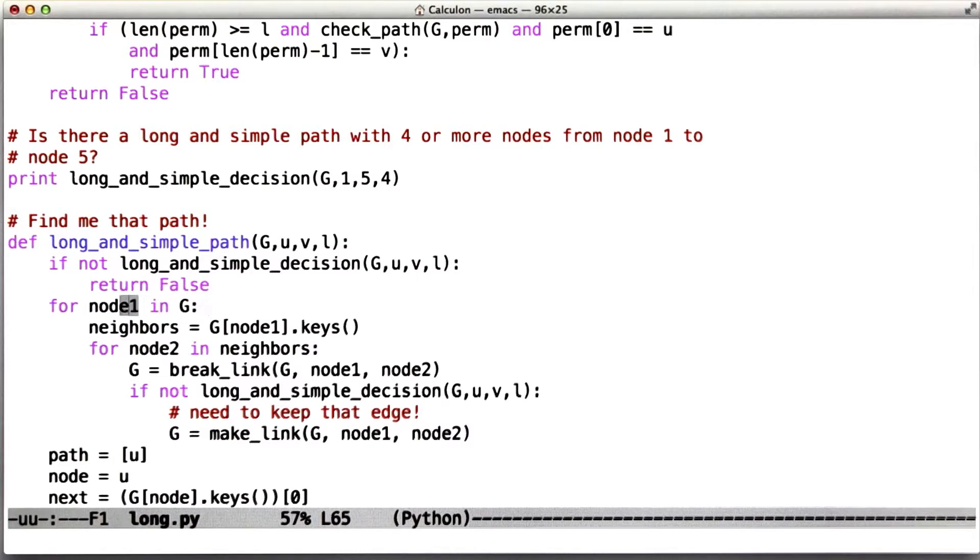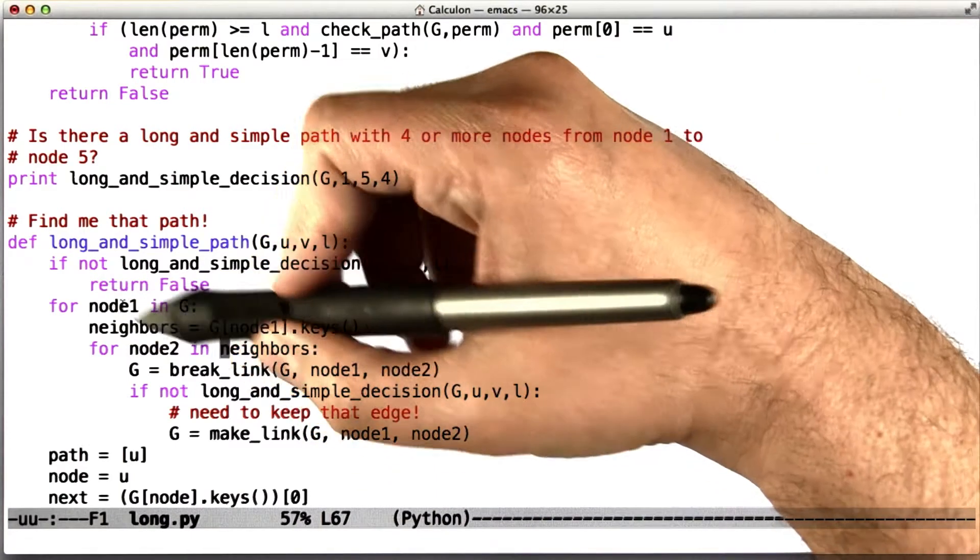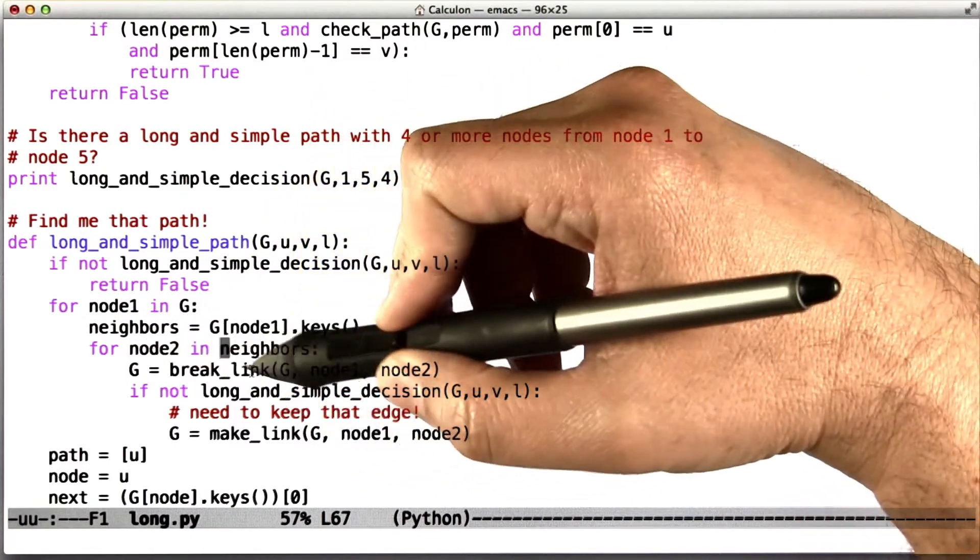So node1 in G, look at all the neighbors, look at node2, which is a neighbor of node1. So now node1, node2 is an edge in the graph, and we're going to break the link.